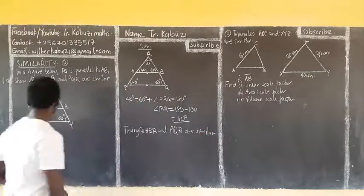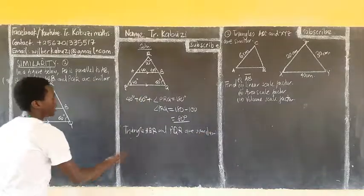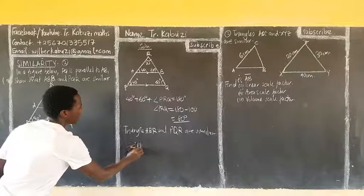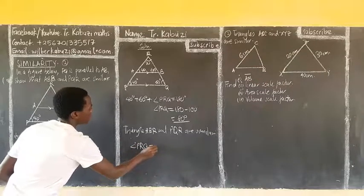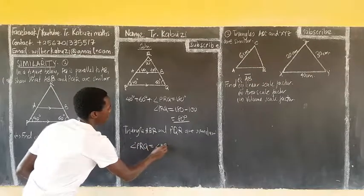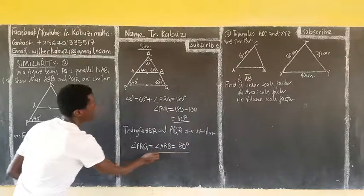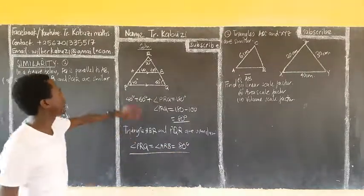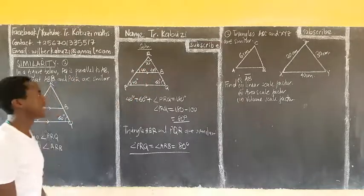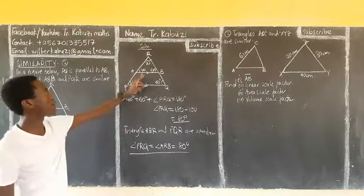And then, I want to get angle PRQ and PRQ, which is the same as angle ARB. All of them are equal to 80 degrees. Why are they similar? Because they are same angles, corresponding angles, I think you see.